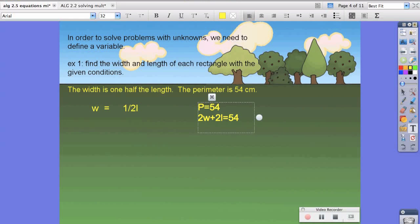Now we know what w is, or the width is. It says w equals one half l. So now anytime I see w, I can substitute that with one half l. So the two w we still had, the w is one half l, plus two l equals 54.